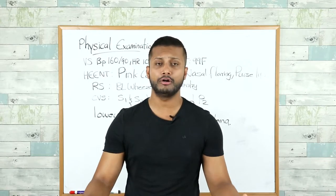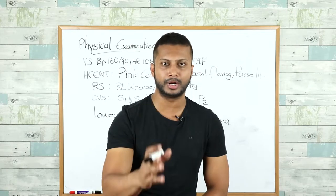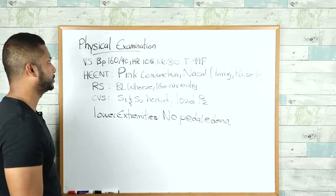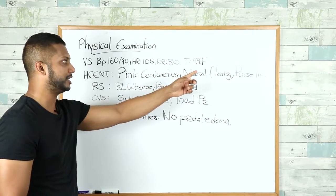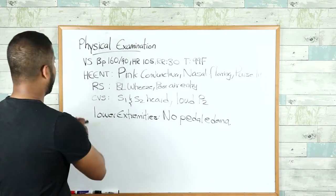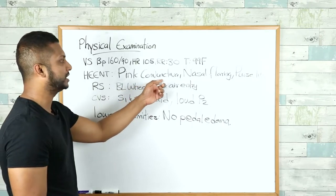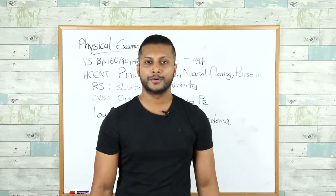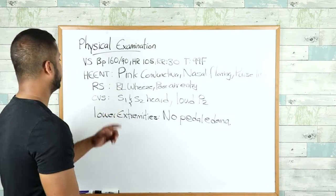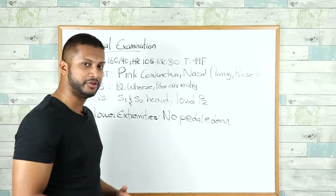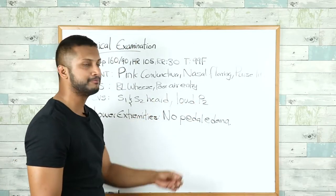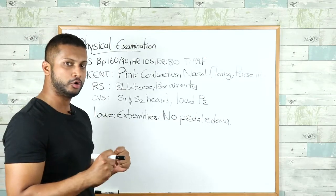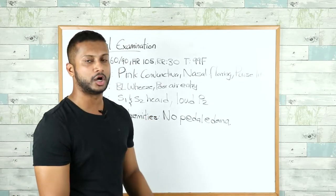You've completed the history taking and now you're going to move on to the physical exam, which is a very important part. You must examine your patients very thoroughly. This patient's vital signs: blood pressure 160 over 90, heart rate 105, respiratory rate 30, and temperature 99 degrees Fahrenheit. On HEENT, the patient has pink conjunctiva, nasal flaring, and pursed lip breathing. Respiratory: bilateral inspiratory and expiratory wheezing with poor air entry — the lungs are very tight. Cardiovascular: S1, S2 heard with a loud P2. Lower extremities: no pedal edema.